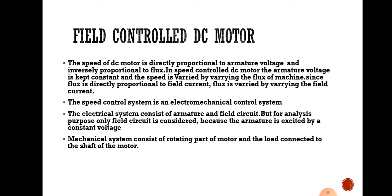Since flux is directly proportional to the field current, the flux is varied by varying the field current. This speed control system is an electromechanical control system. The electrical system consists of the armature and field circuit, but for analysis we consider only the field circuit, since the armature is excited by a constant voltage. The mechanical system consists of the rotating part of the motor and the load connected to the shaft.